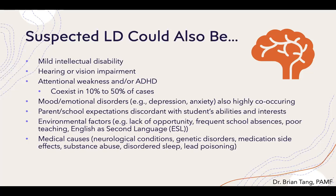Mood and emotional disorders — depression and anxiety — are both things that may interfere with learning and create an impression of a learning disorder. They're also highly co-occurring: students with learning disorders often experience depression and anxiety to the point where those symptoms themselves are problematic. Having an unidentified learning disorder can be depressing when a student isn't performing as expected and isn't getting the help they need. Even young children can have anxiety disorders, and it's important to consider how that anxiety impacts learning — an anxious four-year-old may not be able to demonstrate what they're truly capable of.